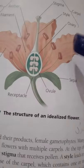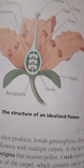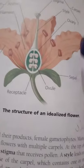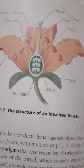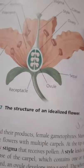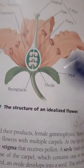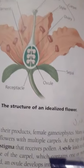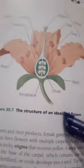The two whorls of sporophylls are the stamens and carpels. Stamens are the microsporophylls that produce microspores, which give rise to pollen grains containing male gametophytes.